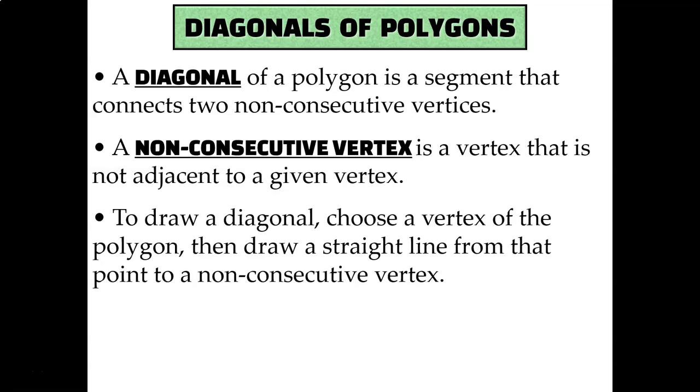A diagonal is a segment that connects to non-consecutive vertices in a polygon. Non-consecutive just means that they're non-adjacent, they're not right next to each other.